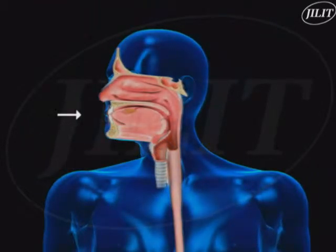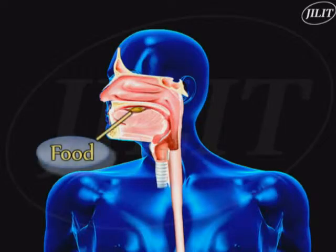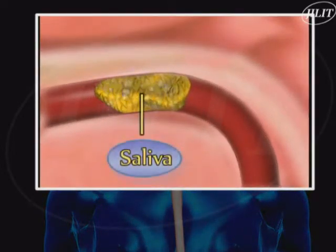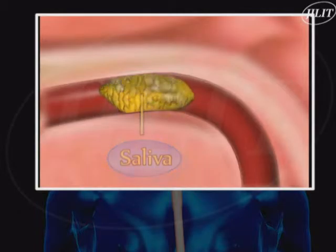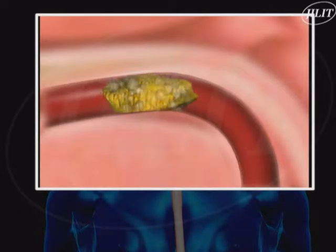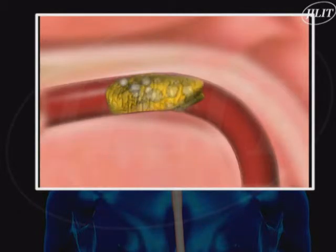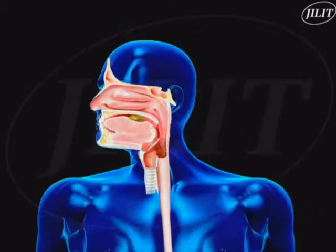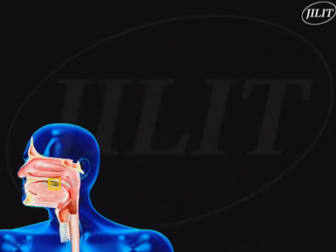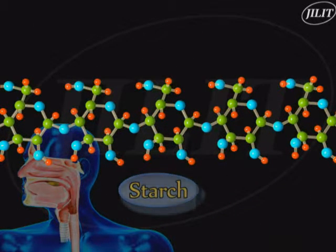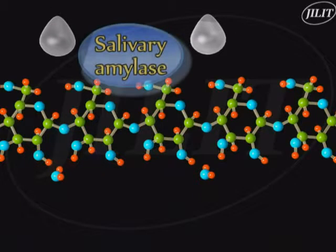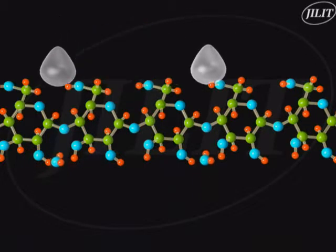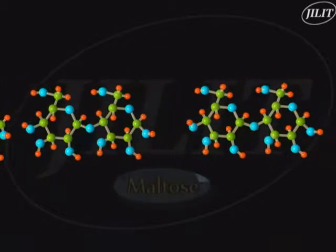The presence of food in the mouth triggers the secretion of saliva. Saliva contains the enzyme salivary amylase. This enzyme begins the hydrolysis of starch and breaks it down into smaller units, maltose.